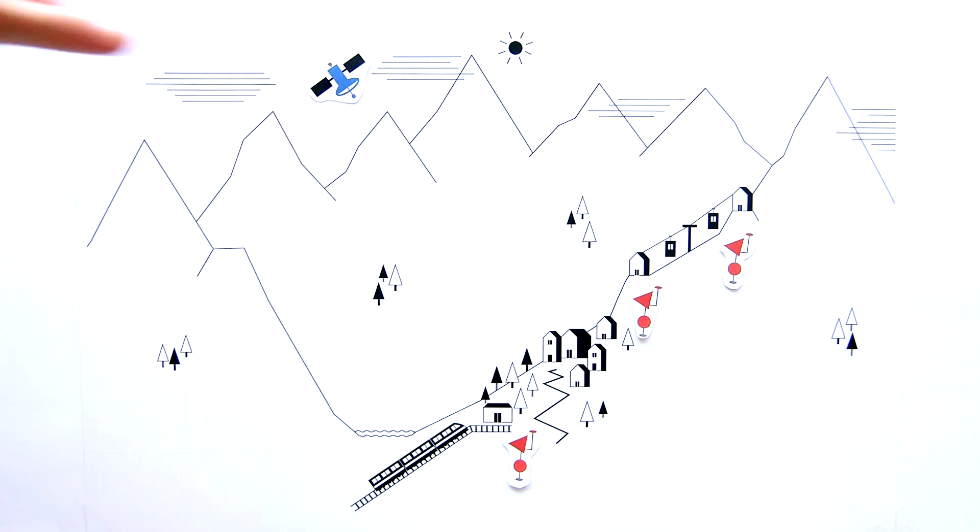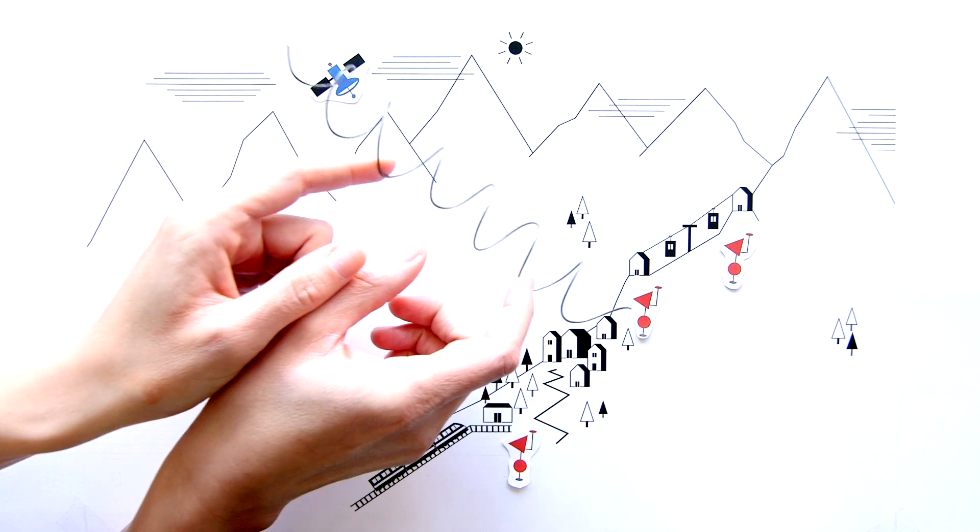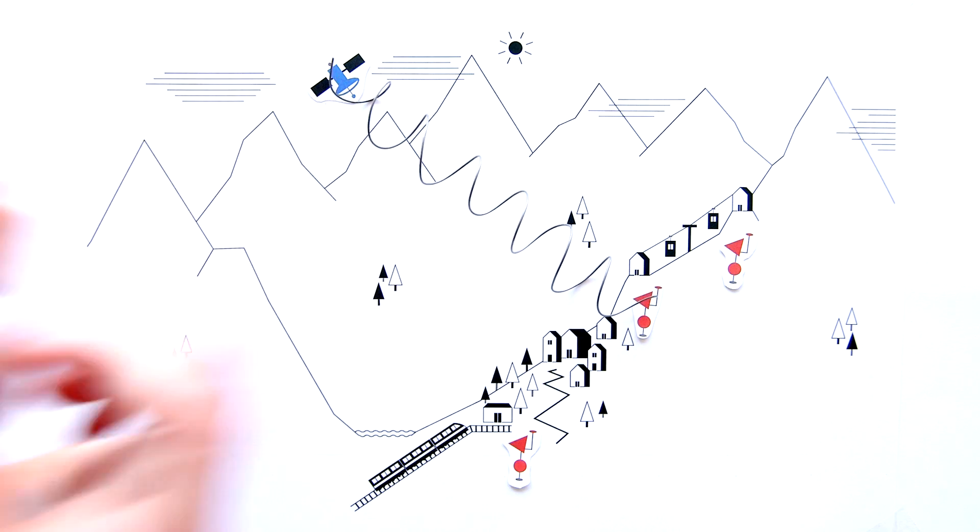A GPS can accurately determine the position of a point on the Earth by measuring the time it takes for a signal to travel from a satellite to a receiver.